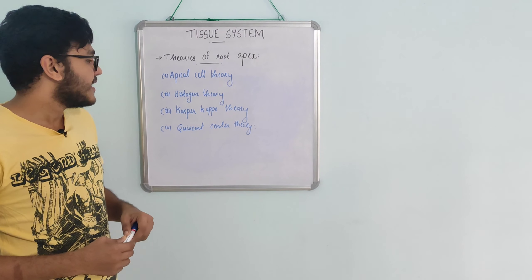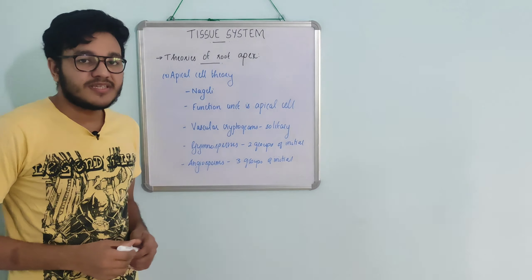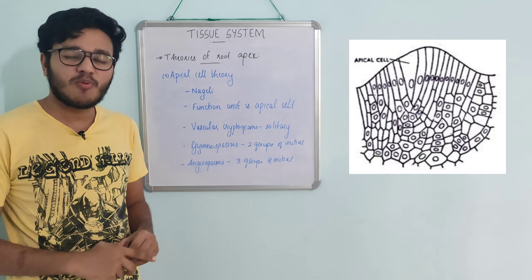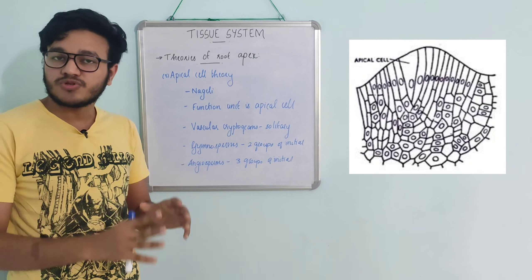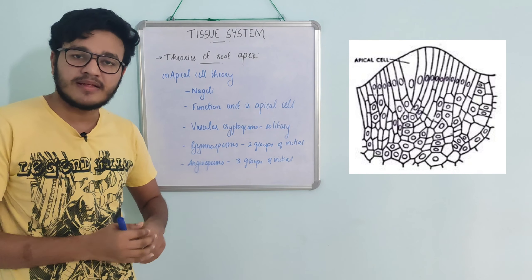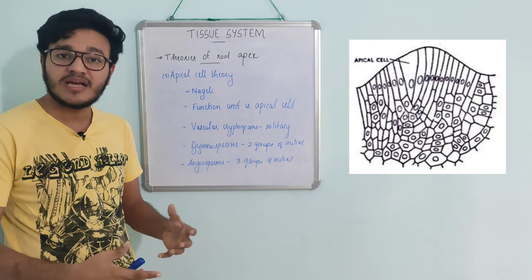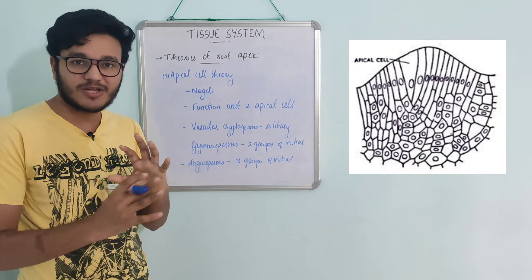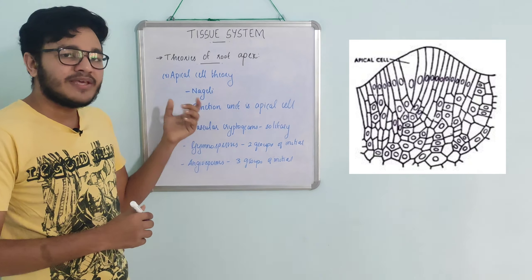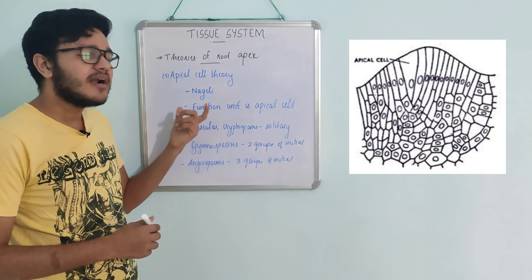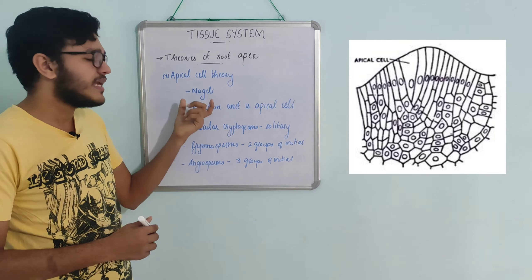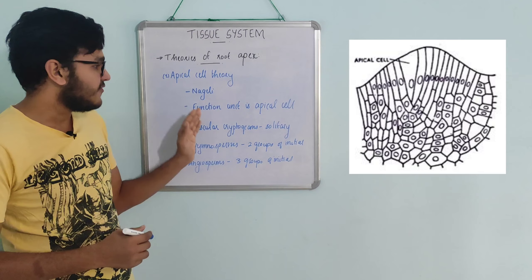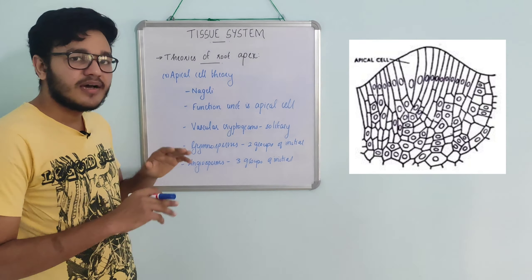Let's begin with the first theory, the apical cell theory. In the root apex, we explain the organization through the apical cell, which serves as a complete functional unit for growth and organization. The apical cell theory was proposed to explain this structure.